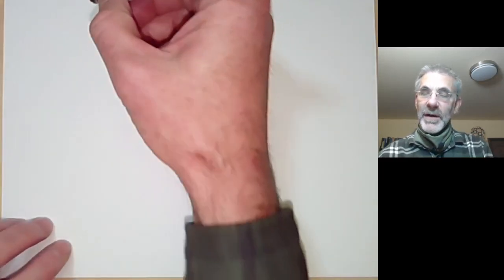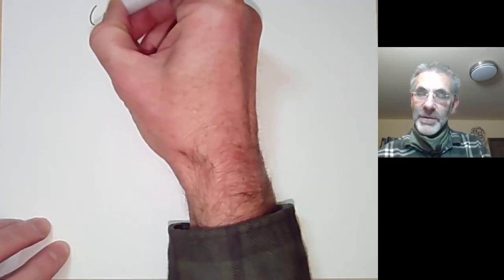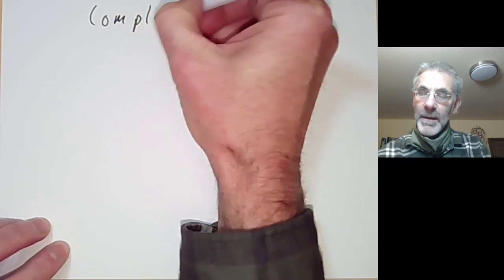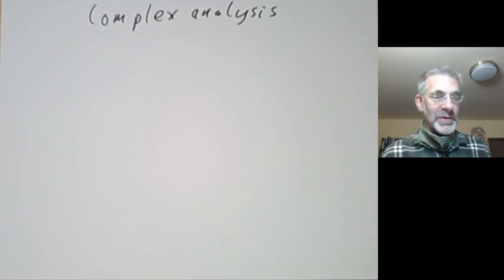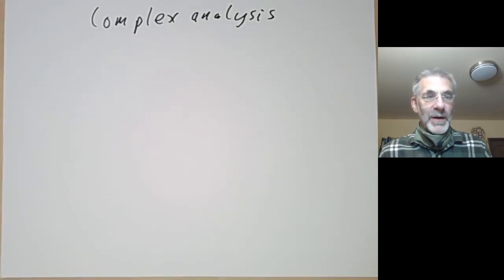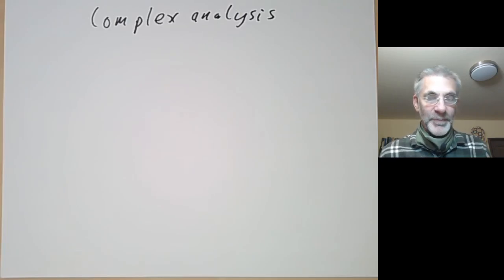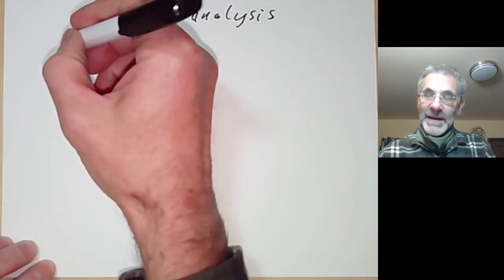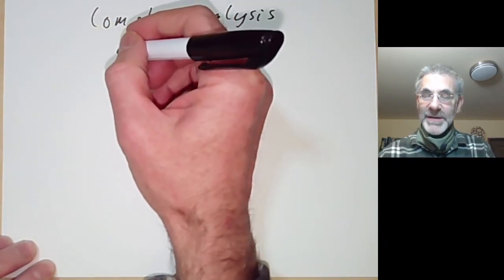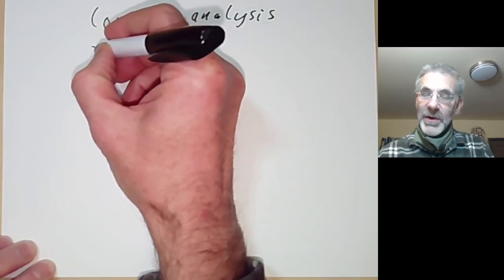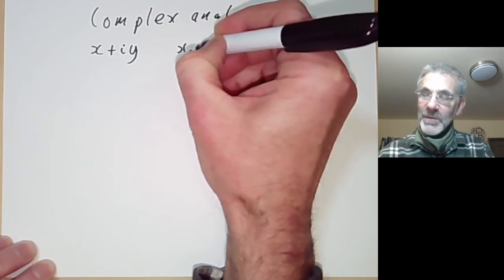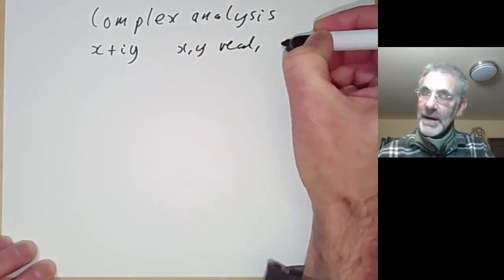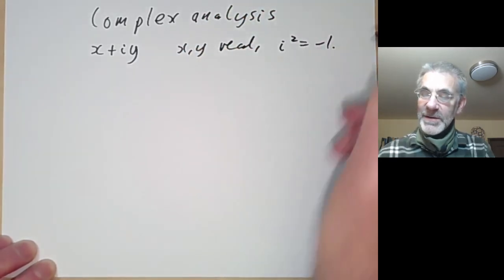This lecture is part of an online undergraduate course on complex analysis. This is an introductory lecture, so I'll give a quick survey of some of the things complex analysis covers. Complex analysis is pretty similar to real analysis, except that it works with complex numbers of the form a plus iy, where x and y are real, and i squared is equal to minus 1.